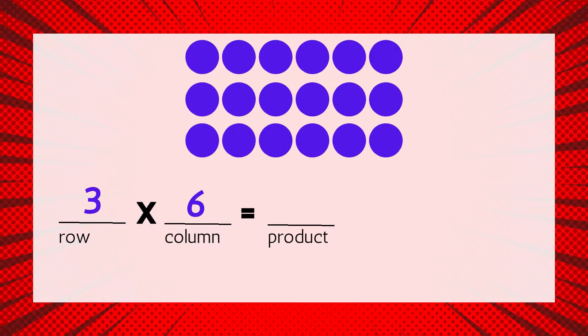Next, we'd like to know the product. We can count by 6s or 3s. Let's try counting by 3s six times: 3, 6, 9, 12, 15, 18. There are 18 circles in all — that's our product. Our multiplication equation reads 3 times 6 equals 18.